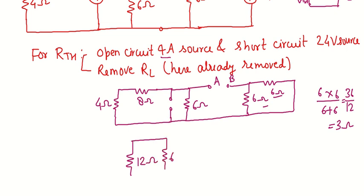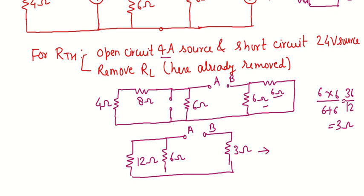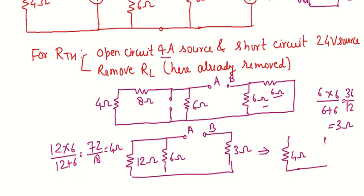The 12 ohm is then in parallel with 6 ohm, giving (12×6)/(12+6) = 4 ohm. The two parallel 6 ohm resistances give 3 ohm. The 4 ohm and 3 ohm are in series between terminals A and B, so RTH = 4 + 3 = 7 ohm.